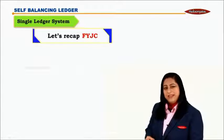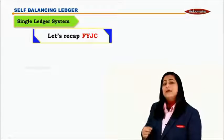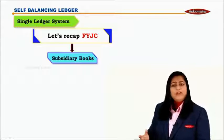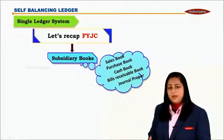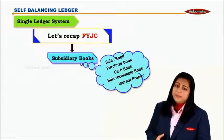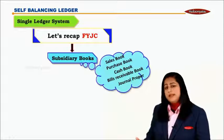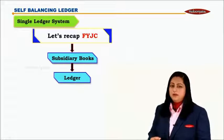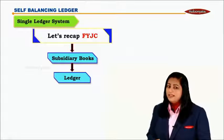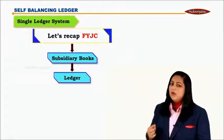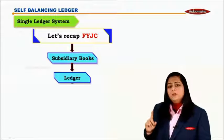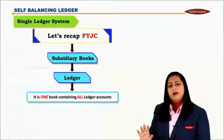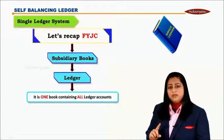In FYJC, you know that a businessman first records transactions in subsidiary books. There are various subsidiary books: purchase book, sales book, bills receivable book, journal proper, etc. From there, he posts transactions to the ledger. In FYJC, we learned that we have only one ledger book in which we maintain all our ledger accounts.